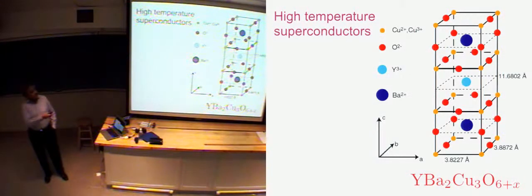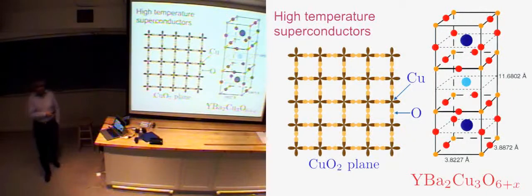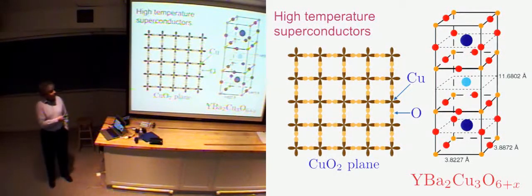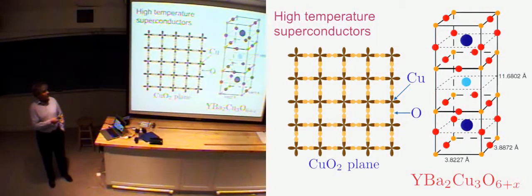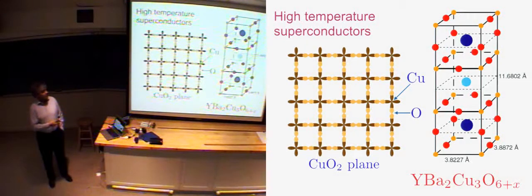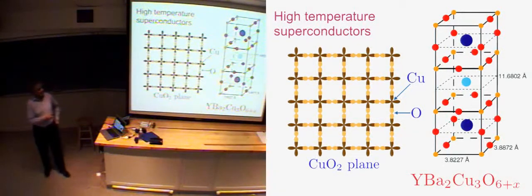We are interested in materials like this. They look rather complicated, but the most important excitations lie on a single plane of copper and oxygen. If I draw that plane here, I'm going to focus mostly — essentially for every slide in my talk — on the dynamics of the electrons in this plane. The copper atoms have one orbital here and the oxygen atom has one orbital there. We're interested in following the properties of this particular structure as you vary the density of electrons on this plane. The rest of the crystal is just a clever way of making that happen.